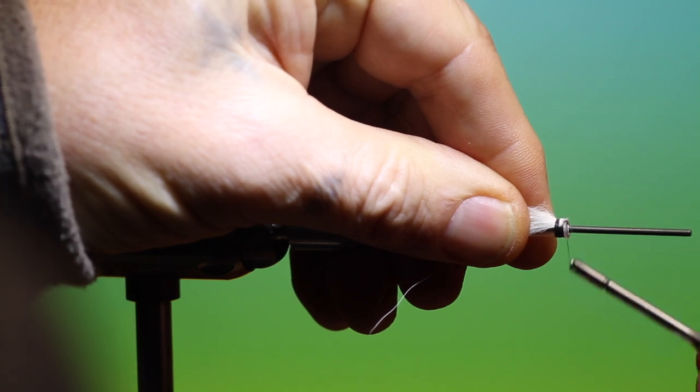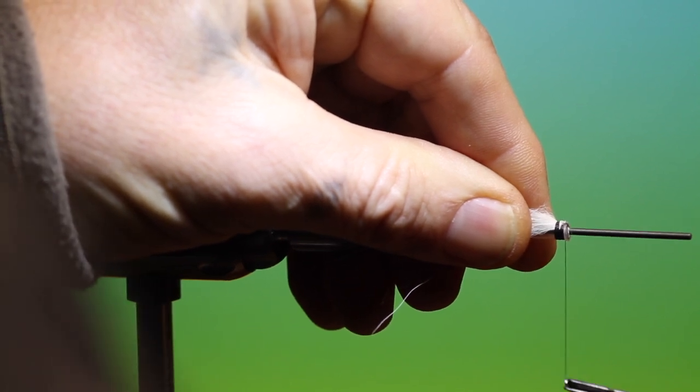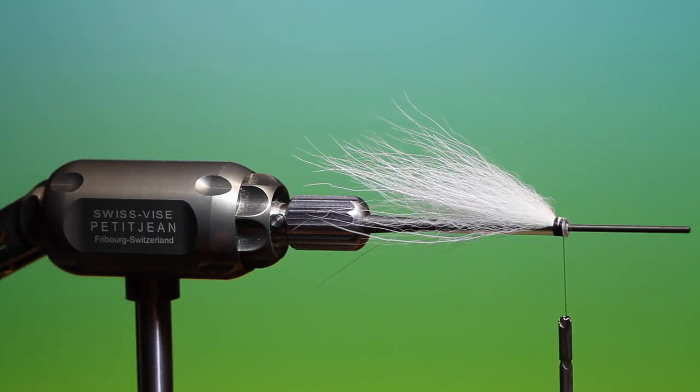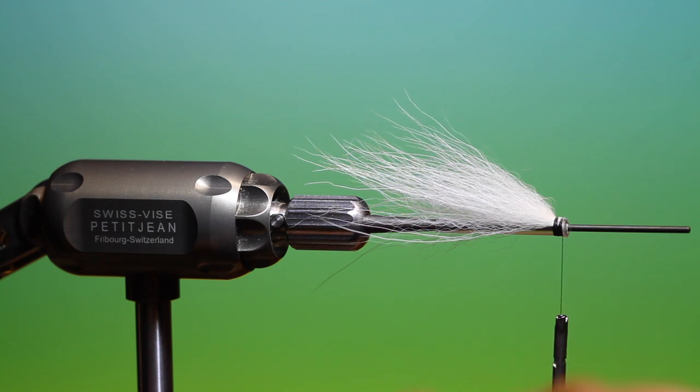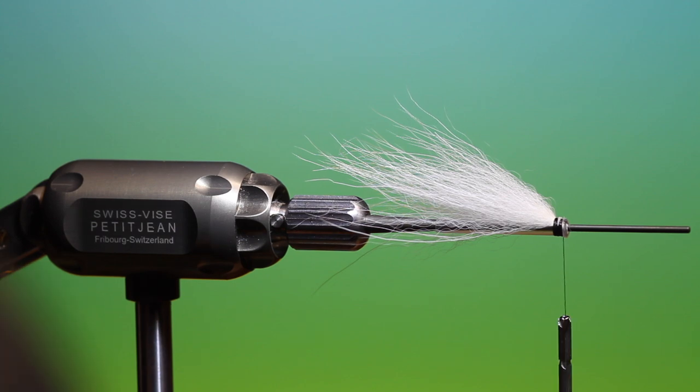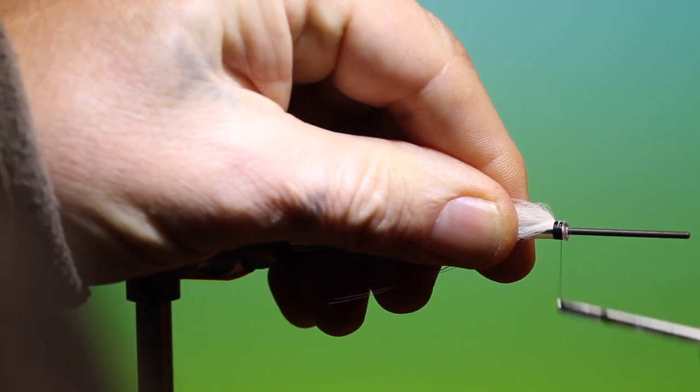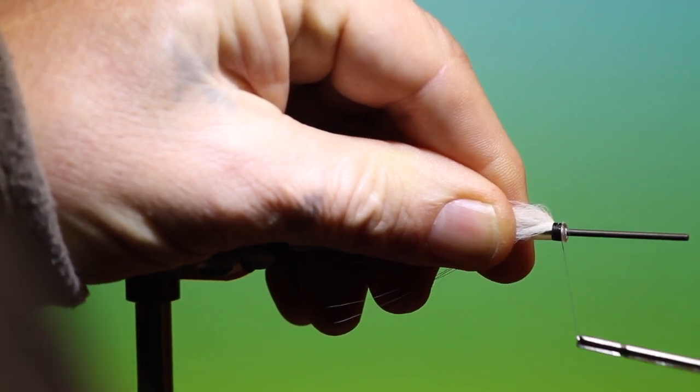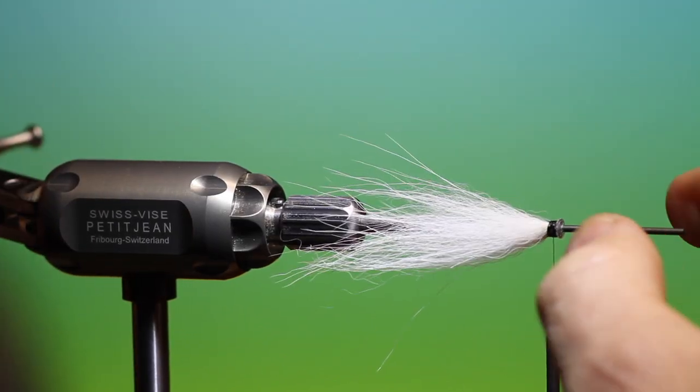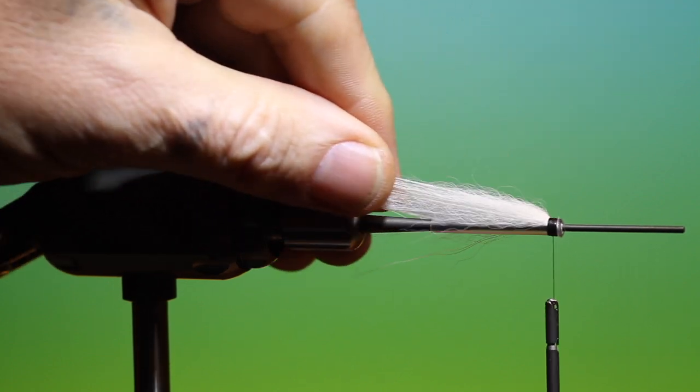We can go forward. Then what I want once we've secured that is a drop of super glue. Very important this. It will make your fly last a lot longer. Just check that. That's good. Little ways about halfway down the tube you want to push that. That will do.